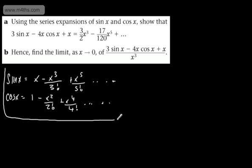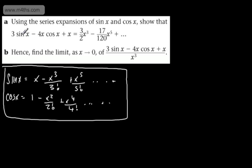We're going to use these now and plug them into the left hand side. So we've got 3 lots of sin x, well sin x is x minus x cubed over 3 factorial, 3 factorial is 6, plus now x to the 5th over 5 factorial, 5 factorial being 120.